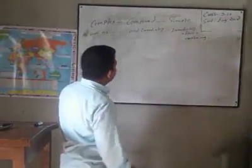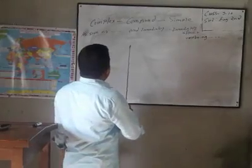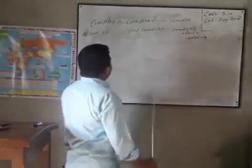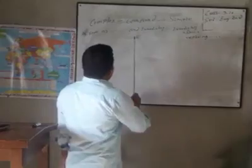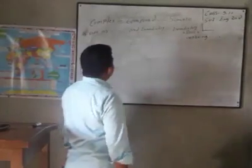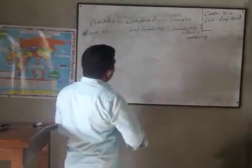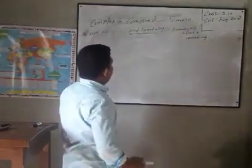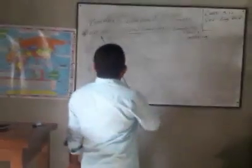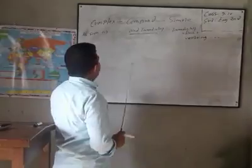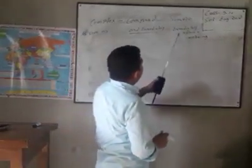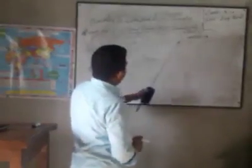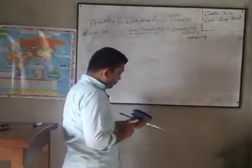I will explain it elaborately. Suppose you have 'as soon as' in the complex sentence and you have to make a compound sentence. First of all, you will remove 'as soon as,' then write the first clause. Where you find a comma in the complex sentence, you will use 'and immediately,' then write the other clause. If asked to make a simple sentence, first use 'immediately after' plus verb plus '-ing.'